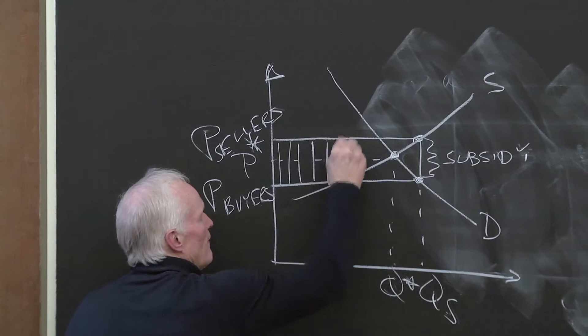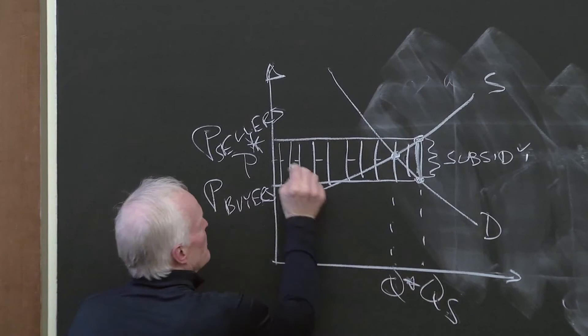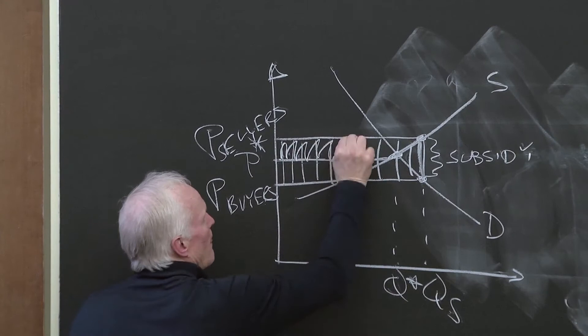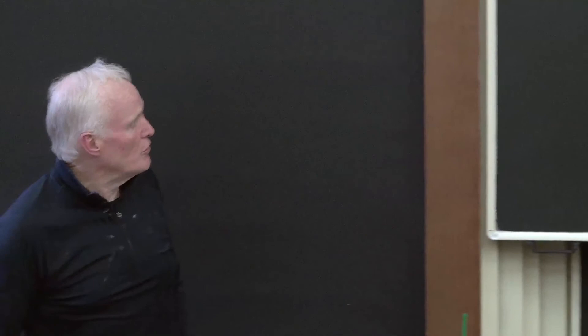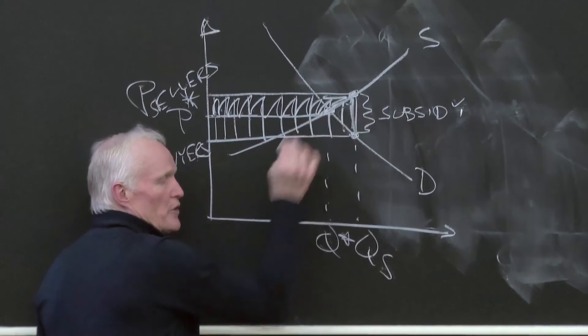And the government's cost of the subsidy is this big box, of which the suppliers collect this fraction. That is, some of that government subsidy is going to go to the sellers, some of it's going to go to the buyers, and some of it's going to be deadweight loss.